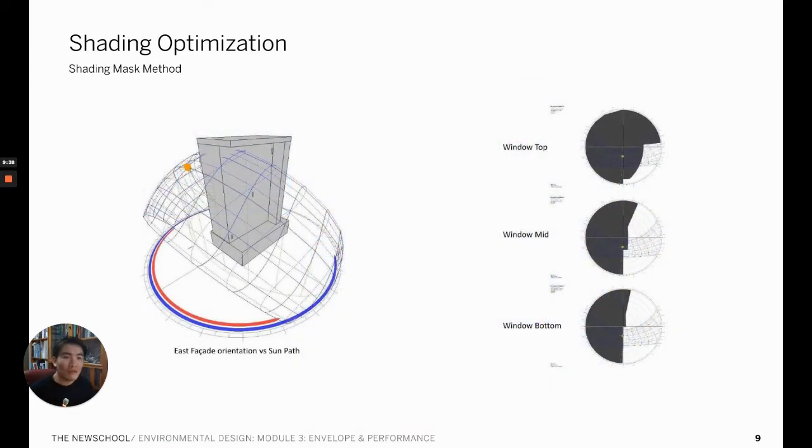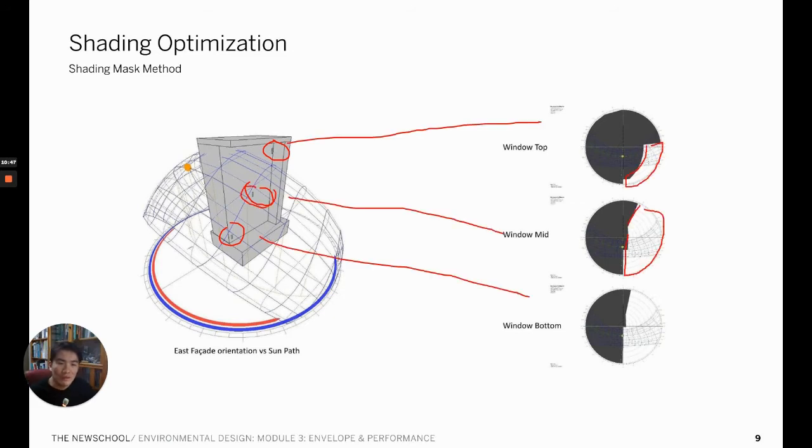This image shows what time of the year this aperture point will be protected from the shading element. We can start by evaluating the representative points of the façade of the building, which in this case we are setting as these three points, and evaluate the initial status of the shading that we are trying to design.